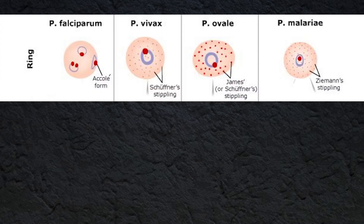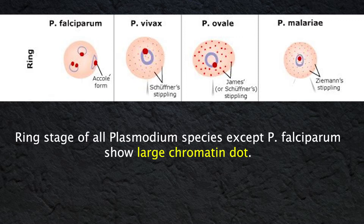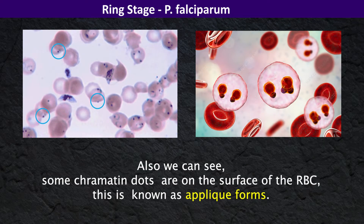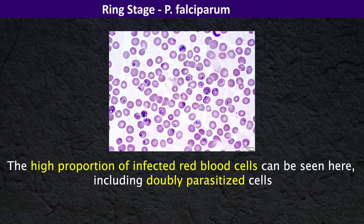Ring stages of all Plasmodium species except Plasmodium falciparum show a large chromatin dot. Plasmodium falciparum, on the contrary, has one to two small chromatin dots. Also, we can see some chromatin dots on the surface of the red blood cells — this is known as appliqué forms. The high proportion of infected red blood cells including double-parasitized cells is characteristic of Plasmodium falciparum.